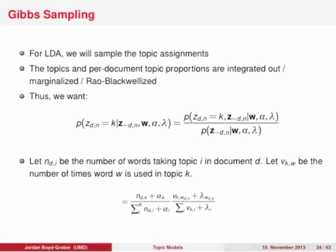The probability of z_dn equals k given all other topic assignments works out to a tractable equation, though it involves some integration — see this week's reading for details. The key terms are n_{dk}, the number of times document d had words assigned to topic k, and v_{k,w_{dn}}, the number of times word w_{dn} appeared in topic k. These are the counts of how many times a document uses a topic and how many times a topic uses a word. Alpha and lambda are the Dirichlet parameters for theta and beta. Note that theta and beta don't appear directly because we've marginalized them out.